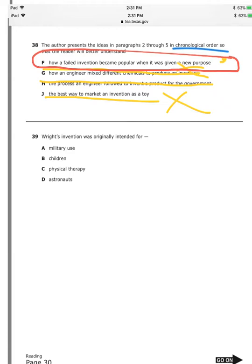Question 39: Wright's invention was originally intended for... Was it for astronauts? No. Physical therapy? No. Children? No. He was creating something for military use — they were asked to create a different kind of rubber, and that's how the invention was born.